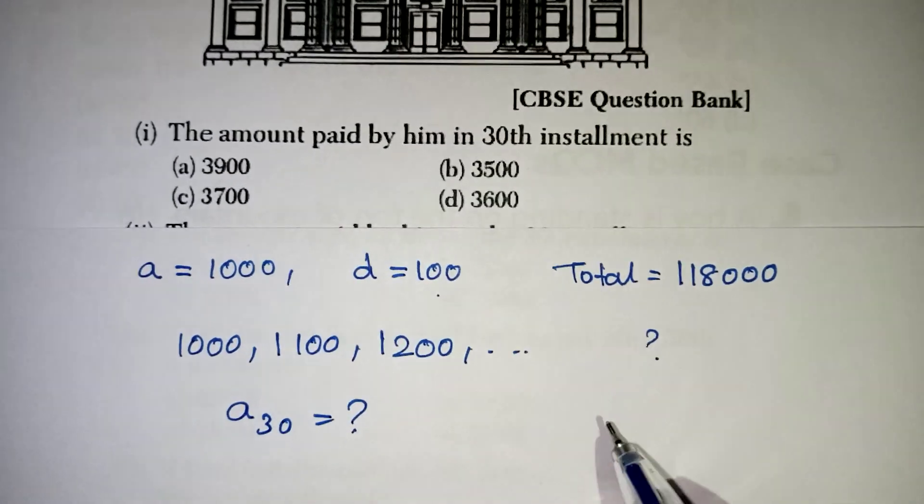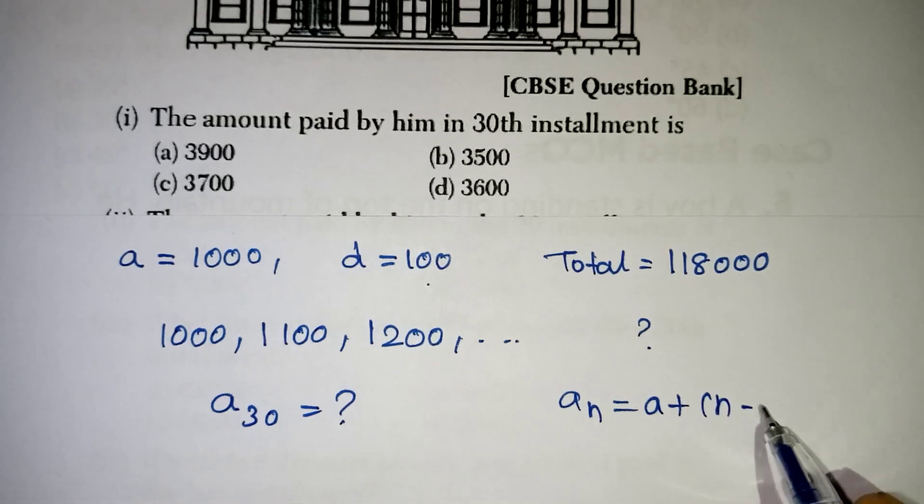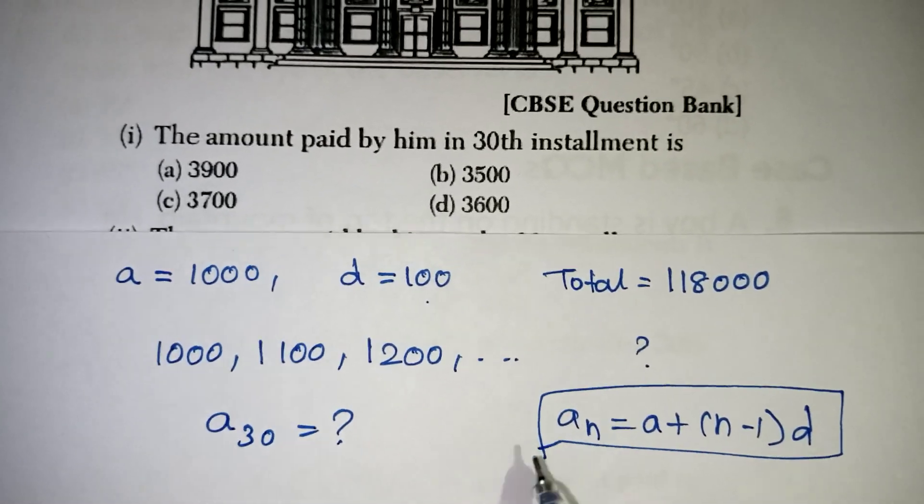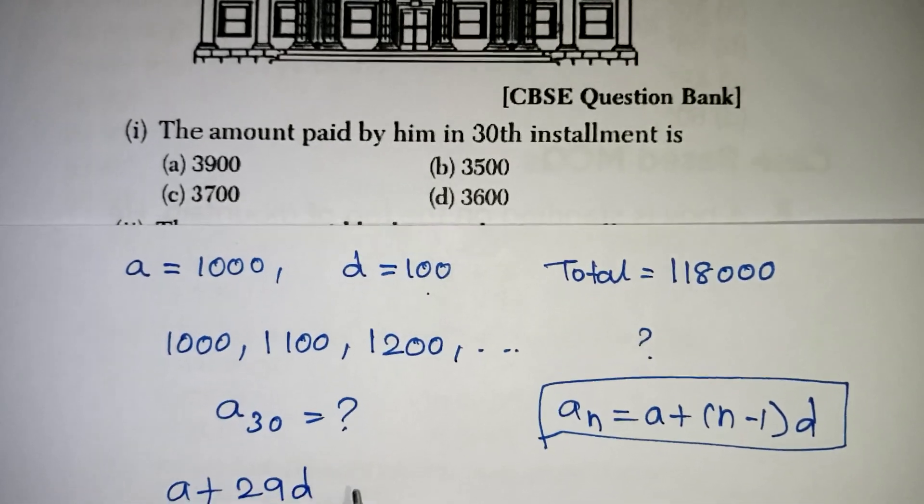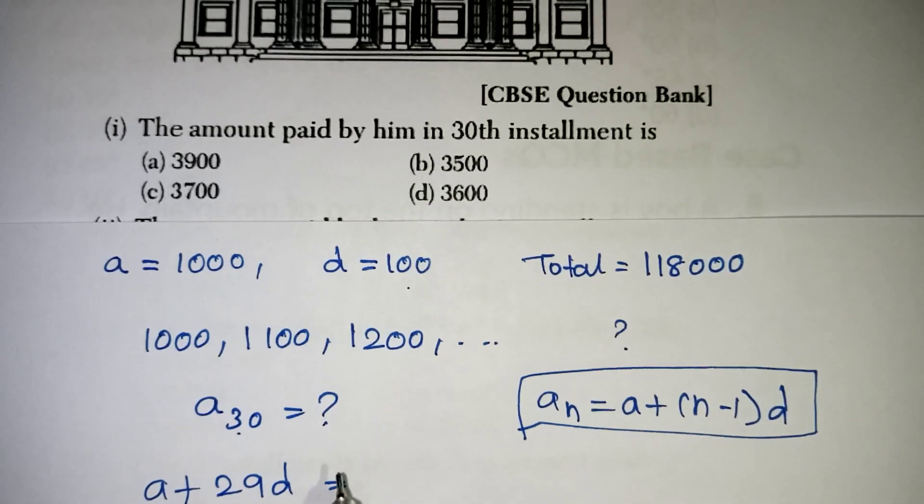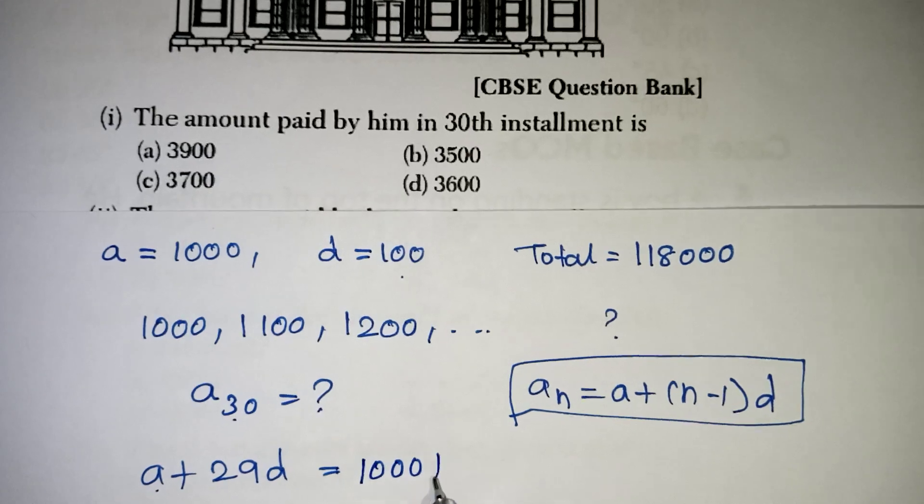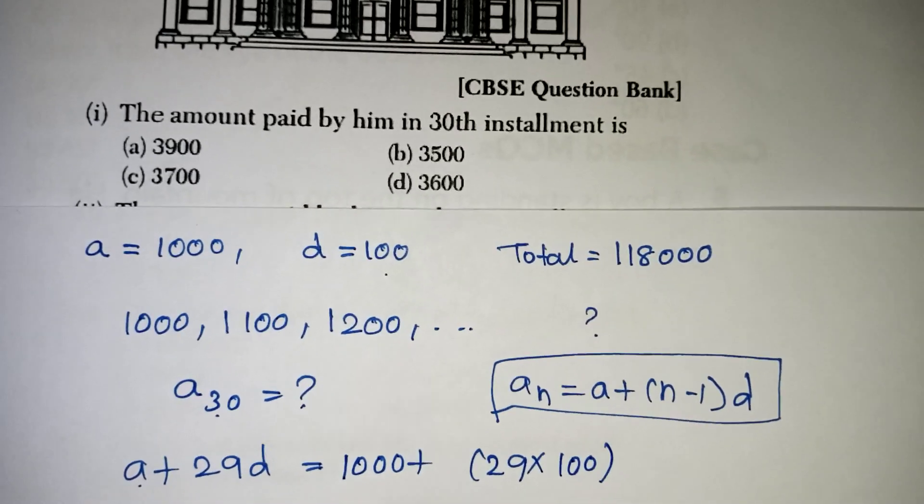A30, our formula is AN formula. AN is equal to A plus N minus 1 into D is our basic formula to find the Nth term. Now, A30 will be written as A plus 29D. So, here 30 minus 1 will be 29D. We can write it. So, A value 1000 plus 29D. 29 into D value 100. We know that is given in the question.